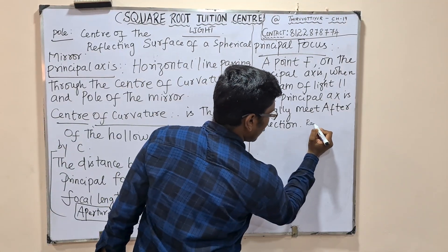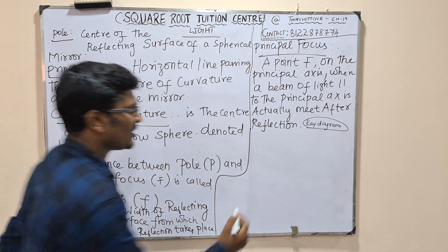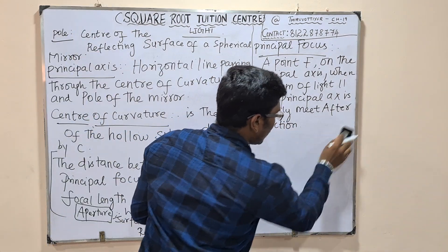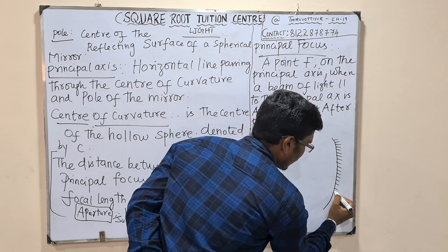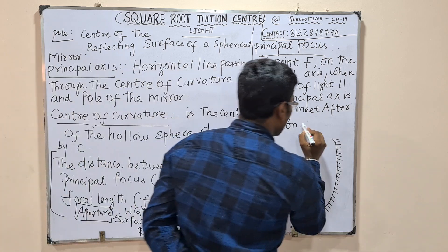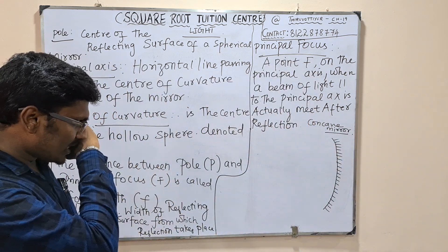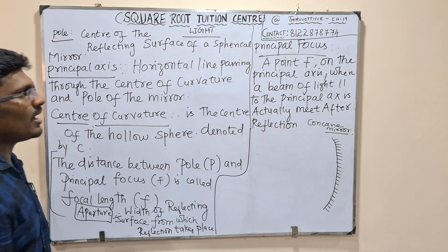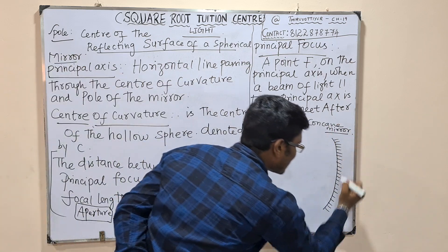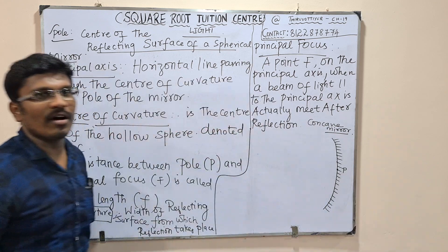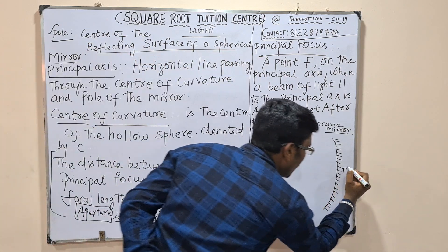We have to go back to ray diagrams. Concave mirror — the outer side has silver coating. The center of the reflecting surface of the spherical mirror is called the Pole. This is the geometric center of the spherical mirror, the center of the reflecting surface.